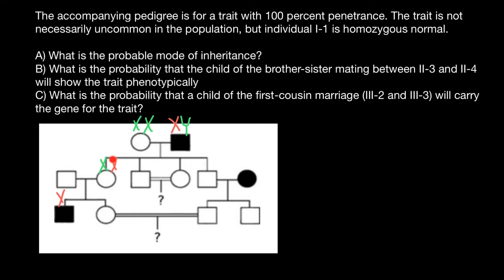He can get either the normal or defective X-chromosome from the mother. From the father's side, who is going to be phenotypically normal, he got the Y-allele. So this explains that this male is affected with this genetic disorder, and we see that this genetic disorder skipped one generation.